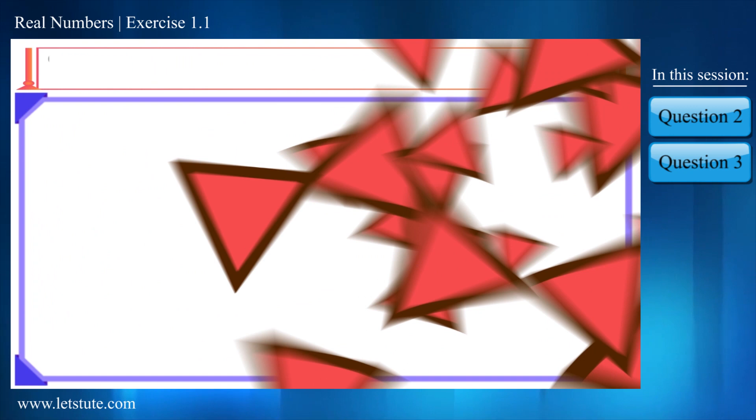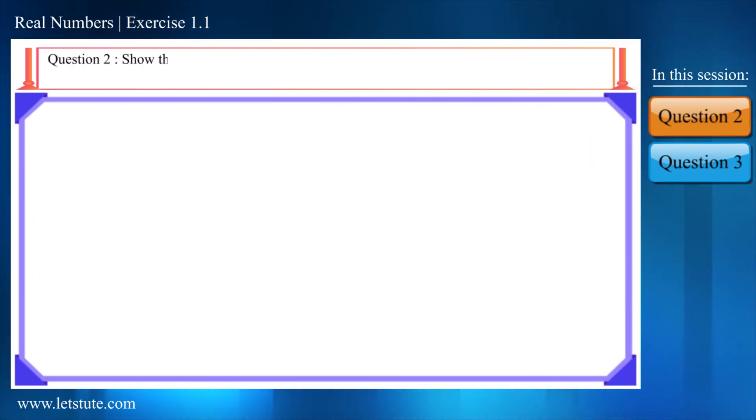Let's look at the second question. Show that any positive odd integer is of the form 6q plus 1 or 6q plus 3 or 6q plus 5 where q is some integer.